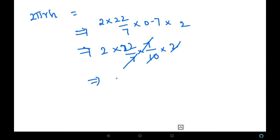So that we can cancel 7 and 7 here, and this 2 and this 10 here. So it will be 2 into 22 into 1 by 5, which equals 22 by 5, so it will be 44 by 5.